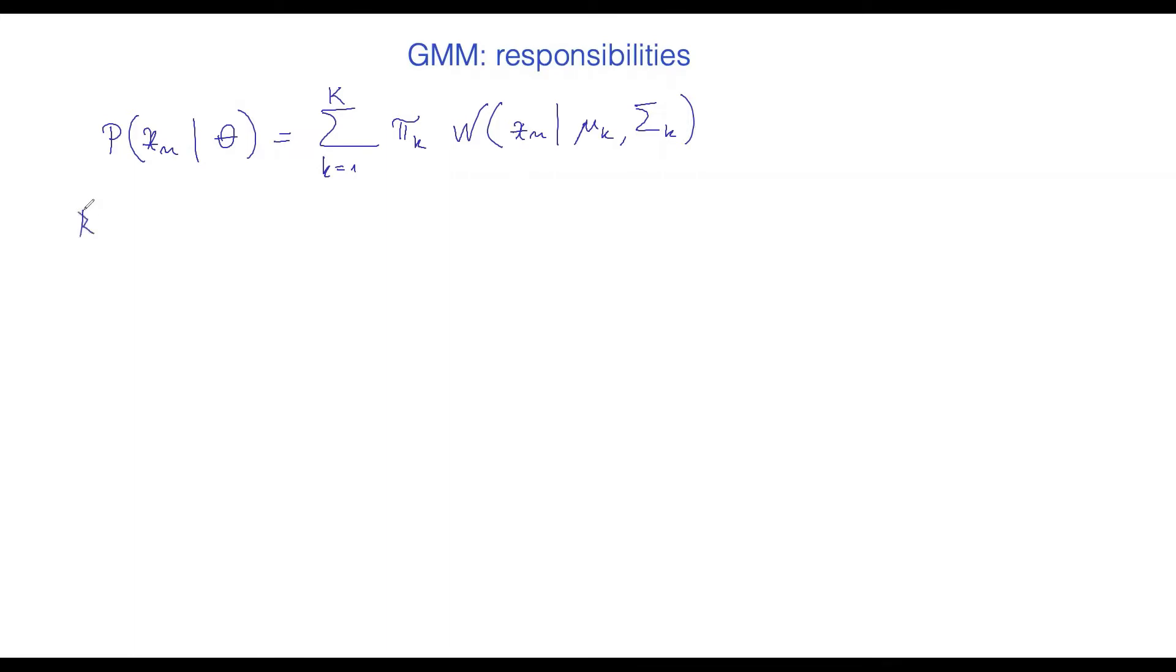So it's xn with mean mu k and covariance matrix sigma k. And so the idea of responsibility, we define this responsibility of the kth component to data point xn, is really going to be exactly how much that particular component contributes to the overall probability of seeing that point xn. So the way we define it